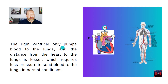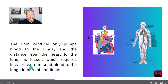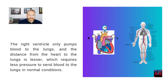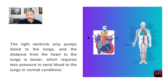The right ventricle only pumps blood to the lungs, and the distance from the heart to the lungs is lesser. This requires less pressure to send blood to the lungs in normal conditions. The lungs are closer to the heart.